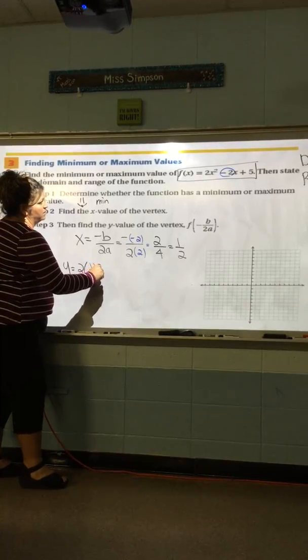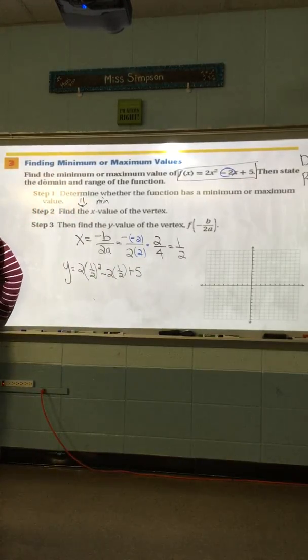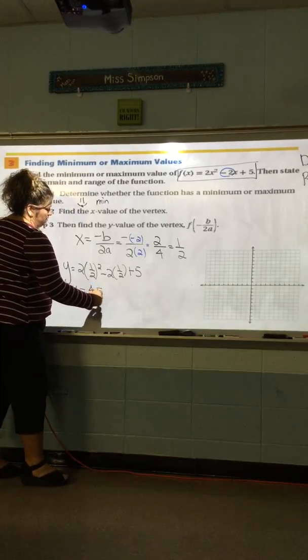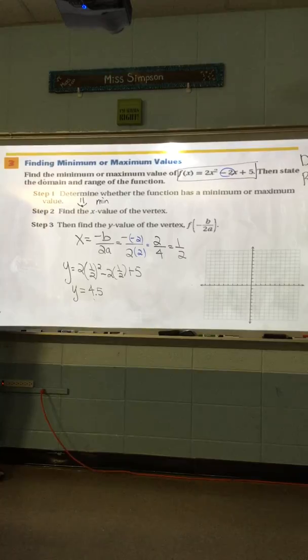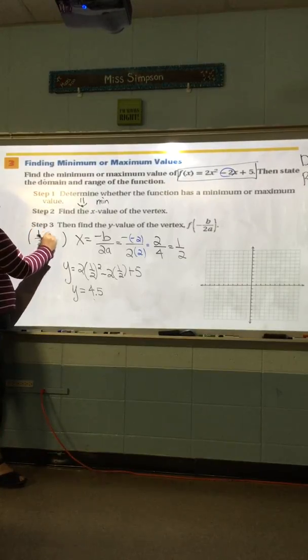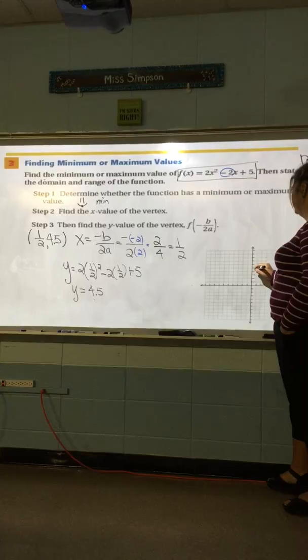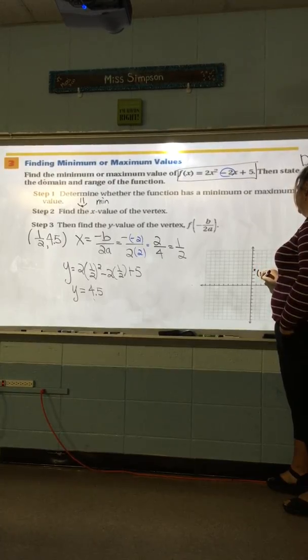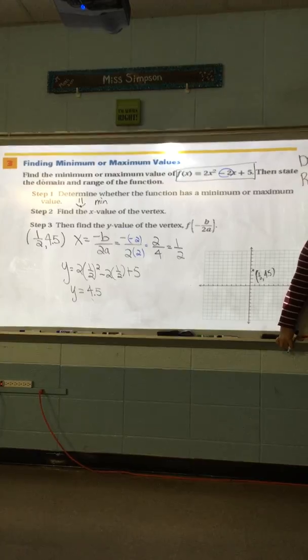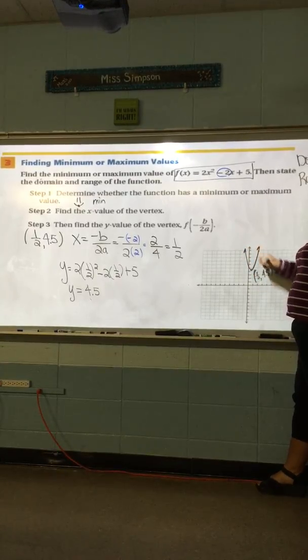So, 2 times 1 half squared minus 2 times 1 half plus 5. Anybody got their calculators out? 4 and a half. Did anybody get the same thing? Yes. So, what did I just find here? The y value. So, what is my vertex? 1 half, 4.5. Let's go over here and graph this. 1 half, 4.5. Did we say this thing opened up or down? Up. What's the y-intercept? 5. So, it's going to go through right there.